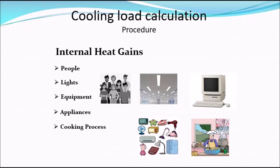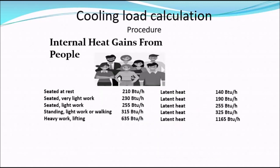The second thing to consider is internal heat gains, which are generated by people, lighting, equipment, appliances, cooking processes, and any equipment or materials brought into the building above the inside design temperature. Let's start with internal heat gains from people. People generate both sensible and latent heat components according to the level of activity. The sensible heat rate increases slightly with higher activity.